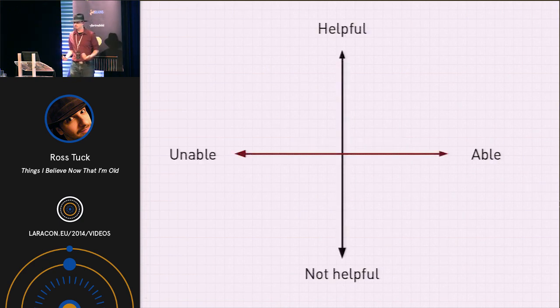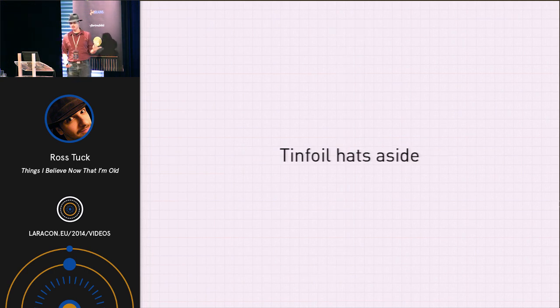So, that's about the capability axis and how you might put it into practice, but it's not the only thing on this chart. What if I were to consider how helpful somebody is? Now, the good news is here, tinfoil hats aside, most people you meet want to help. Most people are good. They want you to succeed.